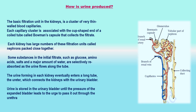The basic filtration unit in the kidneys, like in the lungs, is a cluster of very thin-walled blood capillaries. Each capillary cluster in the kidney is associated with the cup-shaped end of a coiled tube called Bowman's capsule that collects the filtrate. Each kidney has large numbers of these filtration units called nephrons packed close together. Some substances in the initial filtrate, such as glucose, amino acids, salts, and a major amount of water, are selectively reabsorbed as the urine flows along the tube. The amount of water reabsorbed depends on how much excess water there is in the body and how much dissolved waste there is to be excreted. The urine forming in each kidney eventually enters a long tube, the ureter, which connects the kidneys with the urinary bladder, where urine is stored until pressure leads to the urge to pass it out through the urethra.